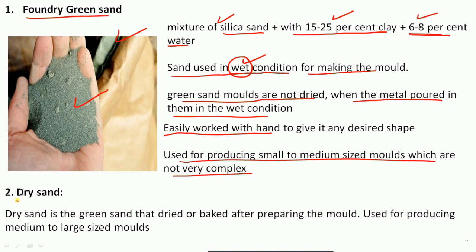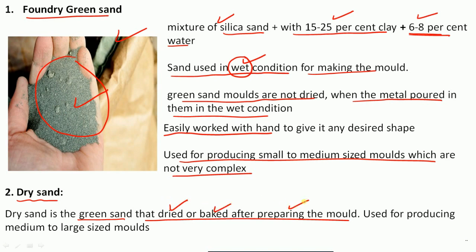Dry sand is the same green sand that is dried or baked after preparing the mold. So dry sand is nothing but green sand which has been dried or baked after mold preparation. It is used for producing medium to large size molds.